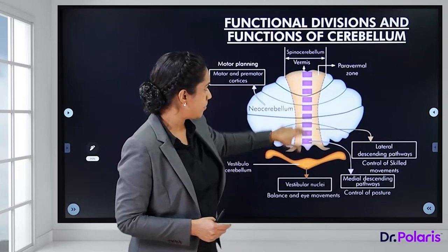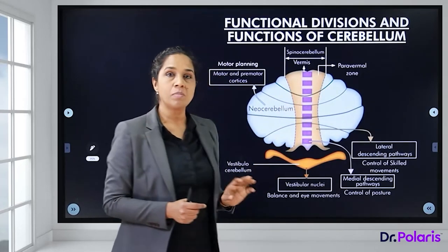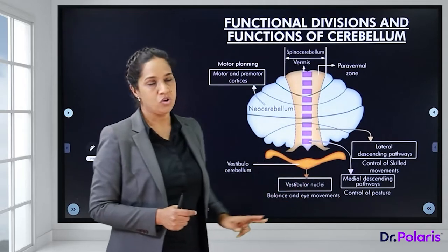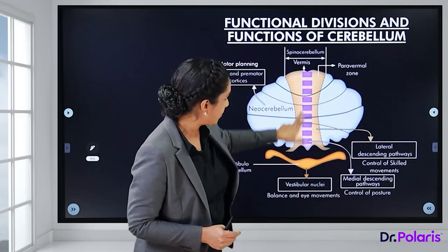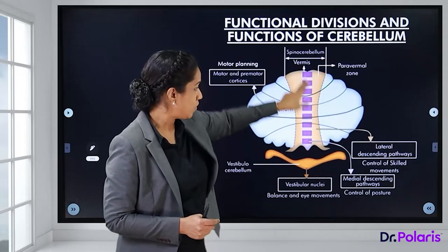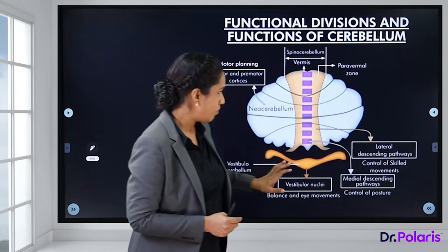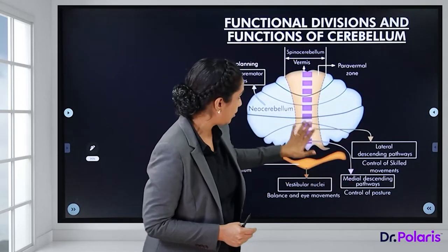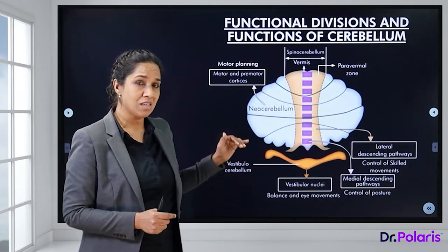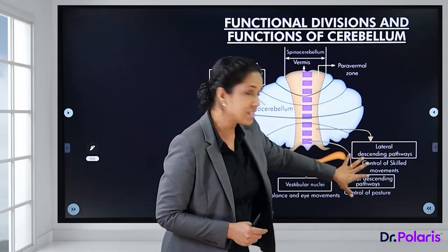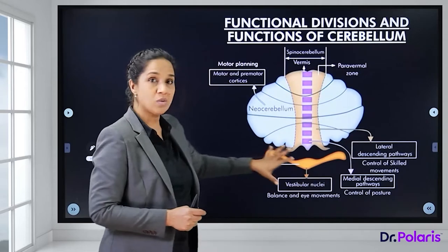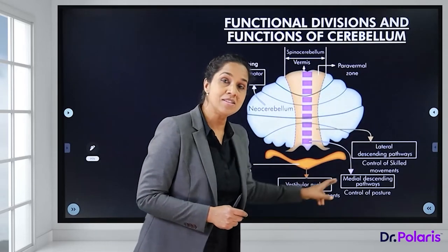The spinocerebellum consists of the central vermis and the two paravermal zones. Lateral descending pathways pass through the paravermal zone while medial descending pathways pass through the vermis. Together, this region controls skilled movements in the body. The vestibulocerebellum, or flocculonodular lobe, takes care of balance and eye movements.